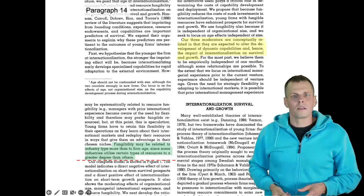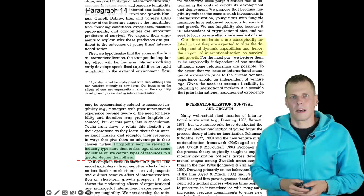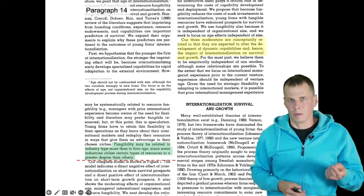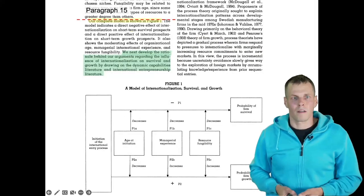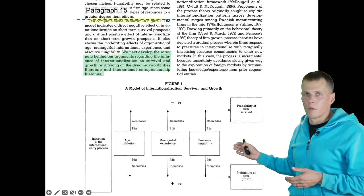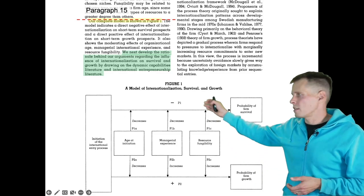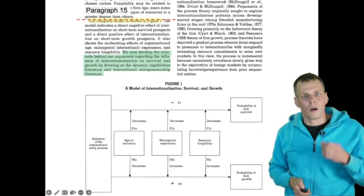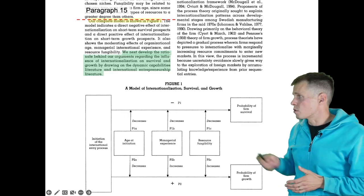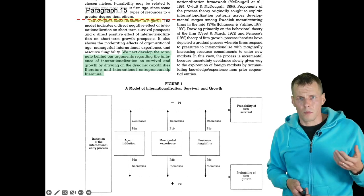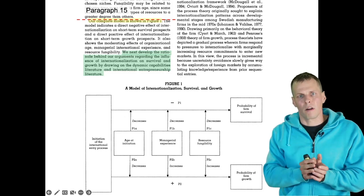There's another change of topic. The previous group of paragraphs talked about the three moderators — age at internationalization, managerial experience, and resource fungibility — and the arguments behind each. Before proceeding it's important to understand each moderator and its argument. The final paragraph simply says here is the complete model and provides a diagram summarizing the claims of the paper. Then in the next section — the theory section — they develop these propositions further and explain the causal logic behind each of the arrows. That is how you read the introduction of this paper using the technique of focusing only on the topic sentence and the concluding sentence, except for short paragraphs where you read in full.